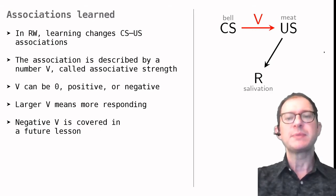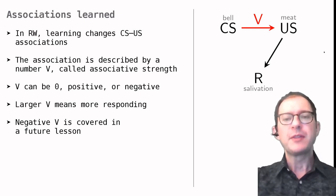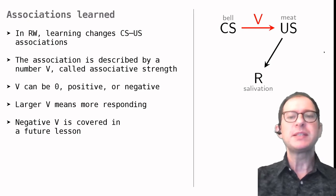When a conditional response has been learned, RW assumes that the associative strength has grown to a positive number. The goal of the model is to describe this growth and understand the principles that underline the change of associative strength.